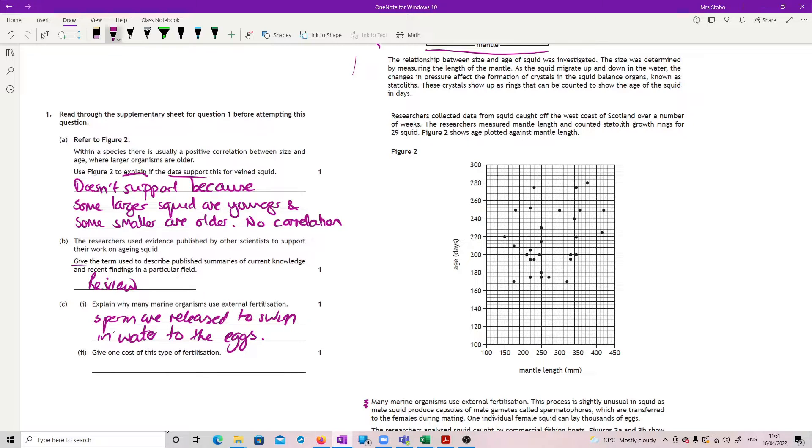Give one cost of this type of fertilization. Well, it's kind of the same question that you have with parental care. If you go with a vast number of offspring, you can't put a lot of care into them, so a lot of them don't make it. Exactly the same thing happens here in terms of you have to produce an awful lot of eggs and sperm, hoping that some of them will actually fertilize. So you're going to have a lot of loss or unsuccessful. So you need to make a lot.